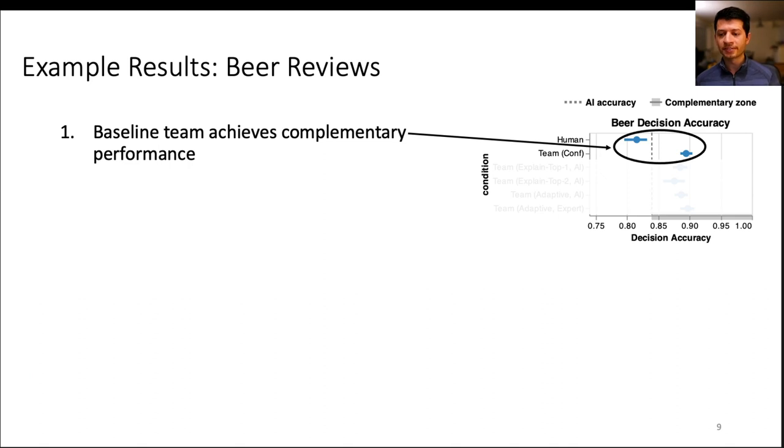Here are results on one of the sentiment classification datasets, but the results are similar on the other two domains. First, we observed that a baseline team where the AI simply shows its recommendation and confidence achieved complementary performance. That is, it performed better than the humans or the AI acting alone.